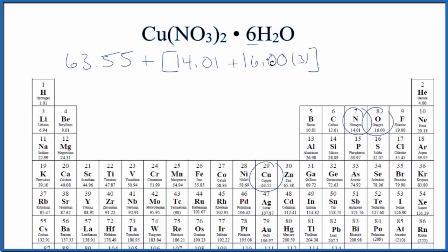And then we're going to multiply all of that, everything in here, by that 2. We'll add that to the six times hydrogen, which on the periodic table is 1.01. We have two of them here, plus the oxygen, which is 16.00 grams per mole.